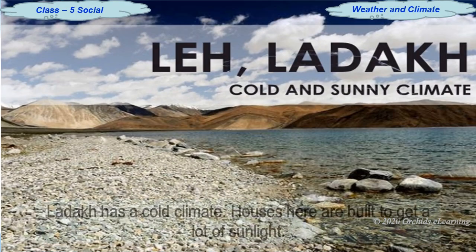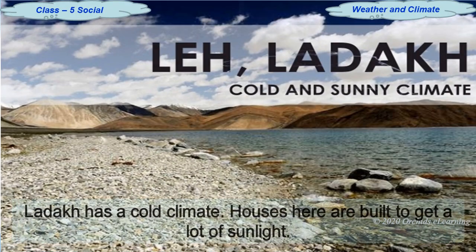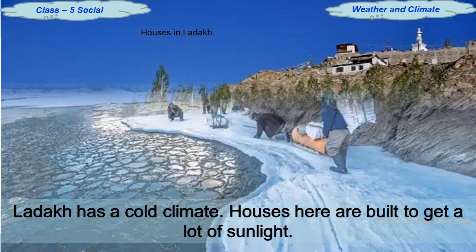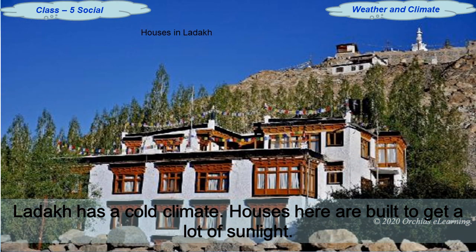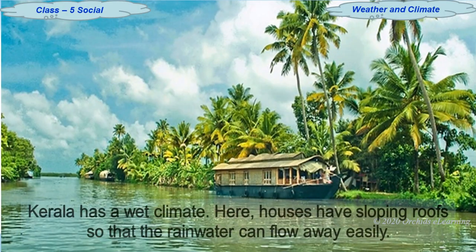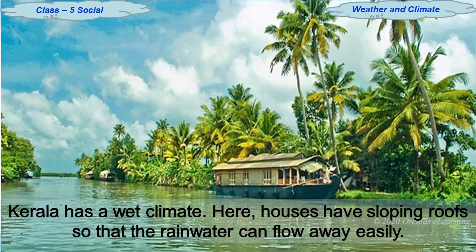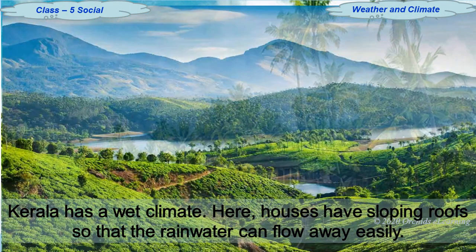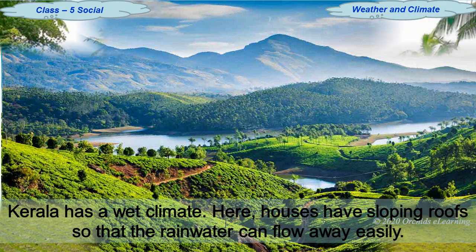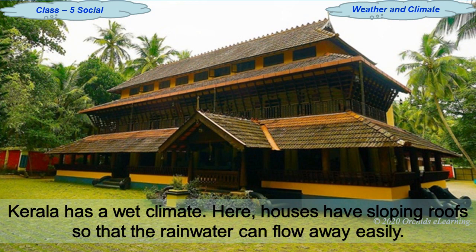Ladakh in north India has a cold climate; houses here are built to get a lot of sunlight. Kerala in south India has a wet climate; here houses have sloping roofs so that the rainwater can flow away easily.